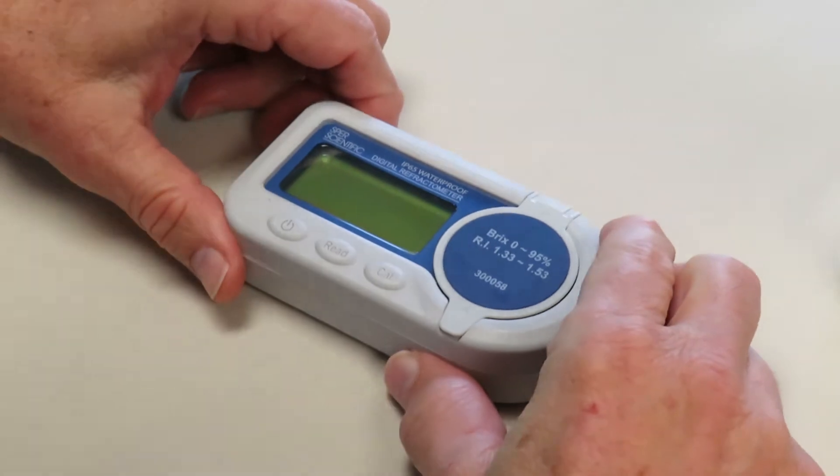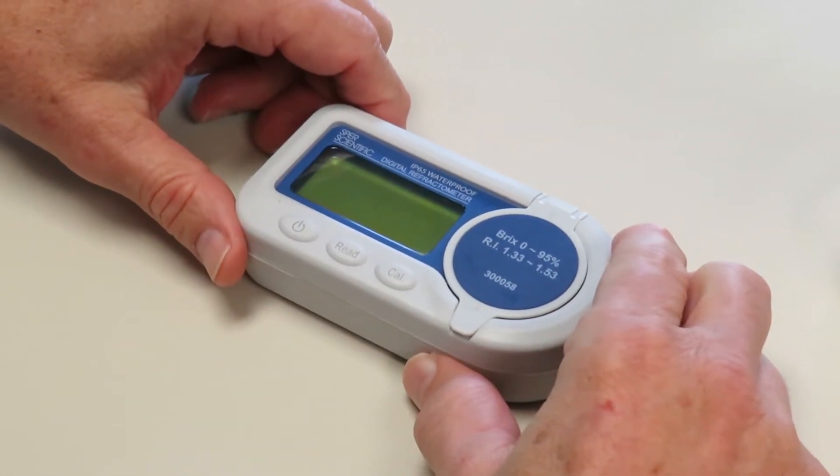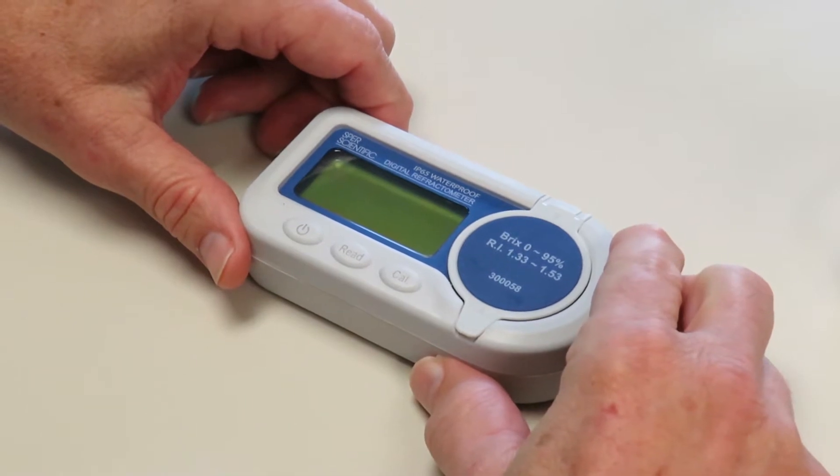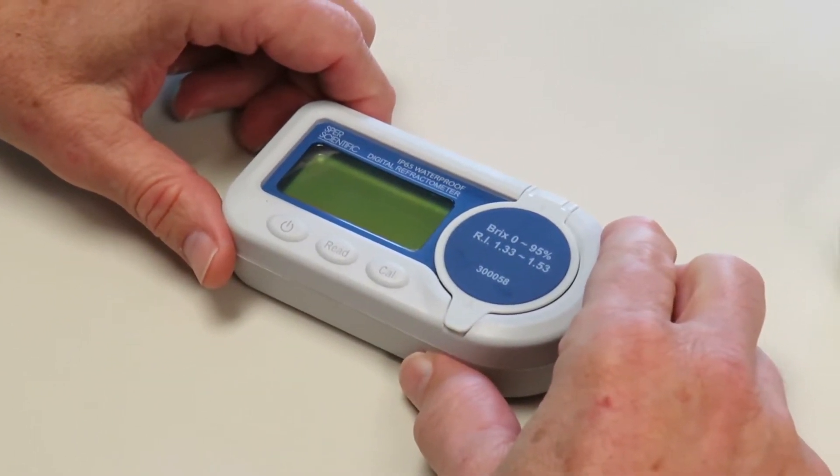All right, today I'm going to show you how to calibrate and use our waterproof digital refractometer series. This is the 3-0-0-0-58, but all of the units in this series will work the same way.